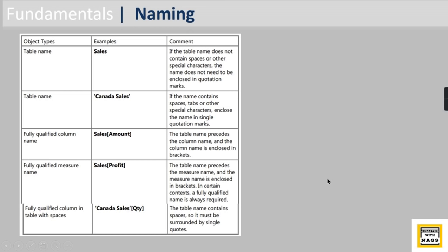Understanding naming helps you write better DAX code. A table name without spaces can be written as-is, like 'Sales'. If it contains spaces, wrap it in single quotes. A fully qualified column reference includes the table name followed by the column name in brackets — for example, 'Fact Sales'[Quantity]. Both column names and measure names follow this same convention.